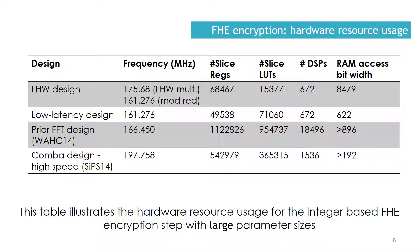The two proposed architectures are implemented on the Xilinx Virtex-7 FPGA. The hardware resource usage of the proposed designs, along with all previous hardware implementations of FHE over the integers for the encryption step, are given in this table. The low Hamming weight design of the encryption step incorporates both proposed multipliers: the low Hamming weight multiplier for the low Hamming weight multiplication-accumulation of the X_i B_i term in encryption, and the low latency multiplier for the modular reductions required in the encryption step. The proposed designs improve upon previous designs in terms of the number of slices and the number of DSPs.